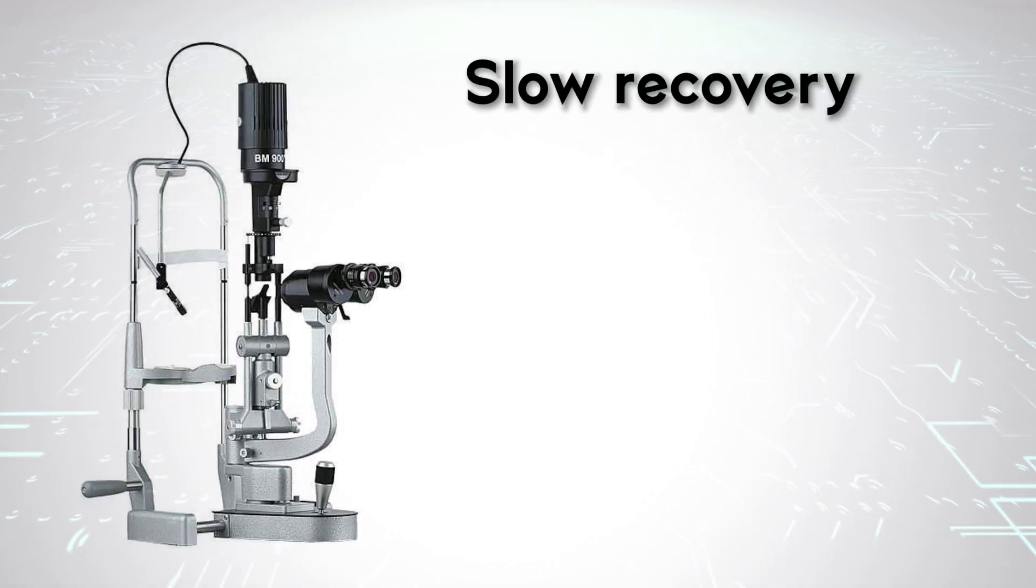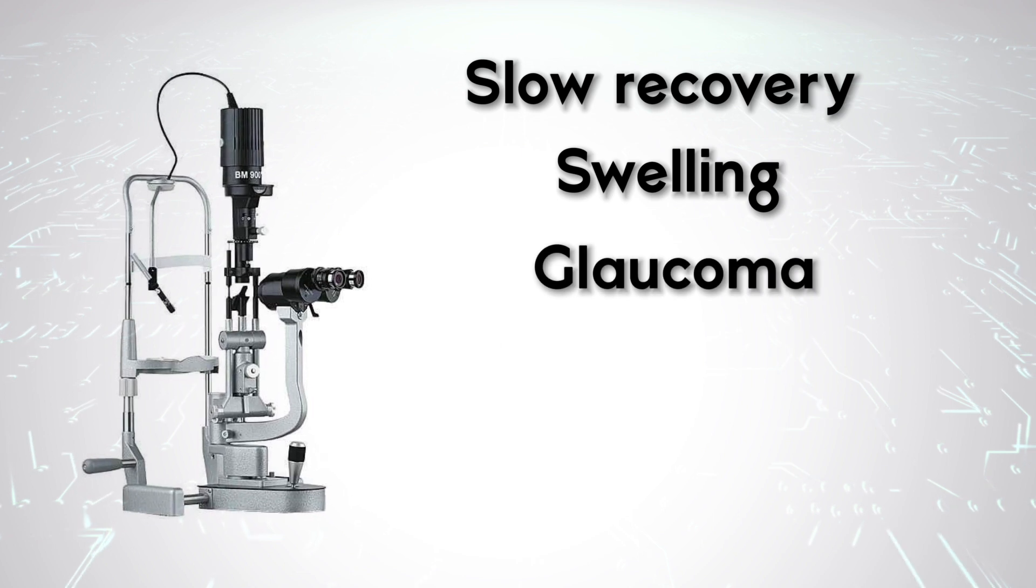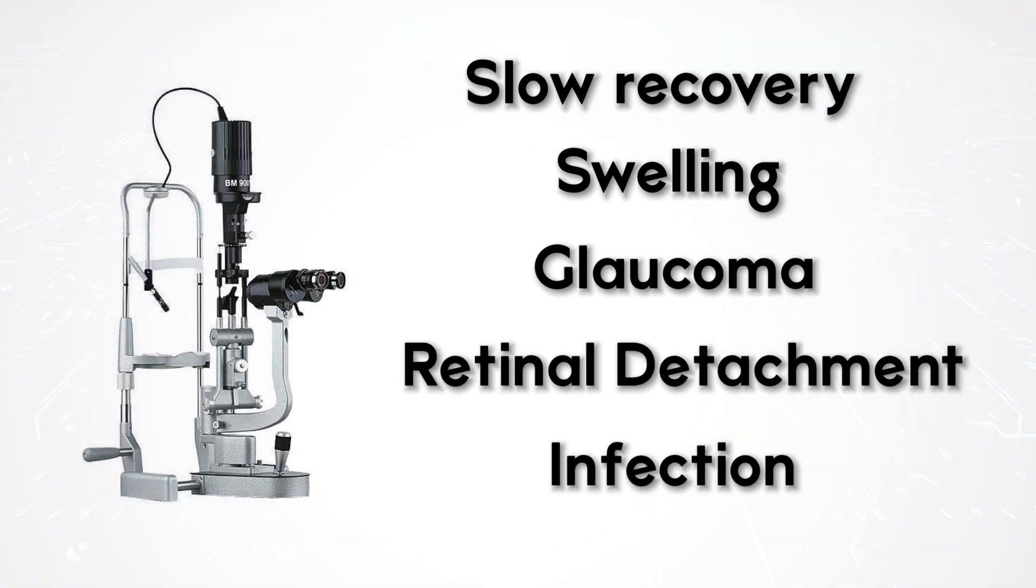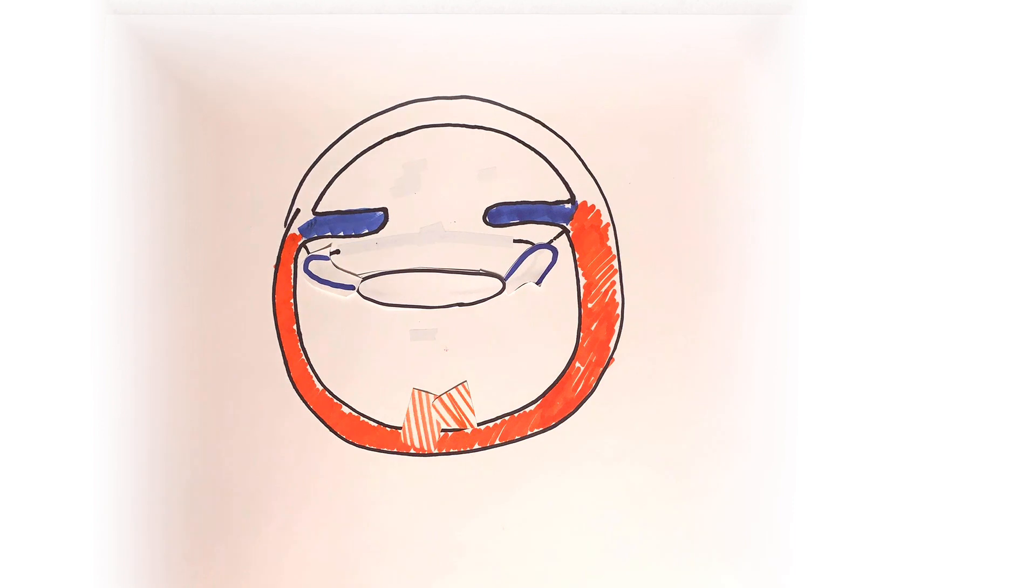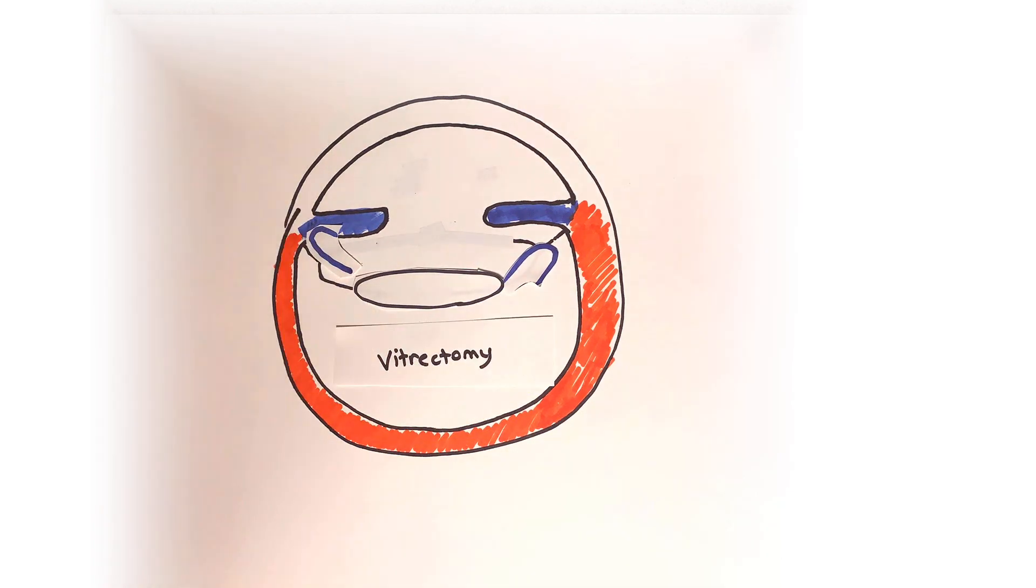If pieces of cataract fall posterior towards the retina, then a secondary surgery with a vitreoretinal surgeon will need to be coordinated. We'll be covering lens exchange and secondary intraocular lens implantation in a future video in this botched cataract surgery series.